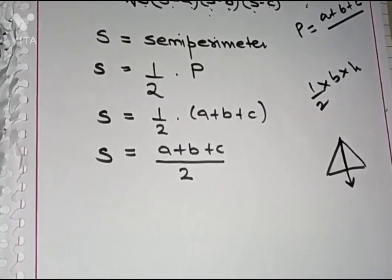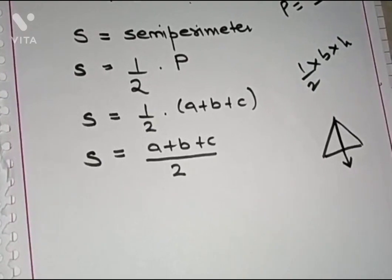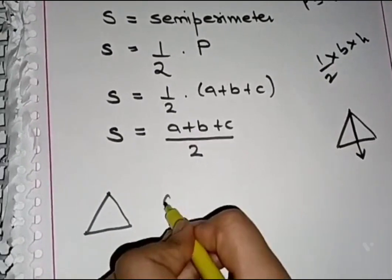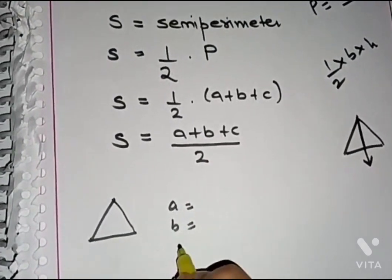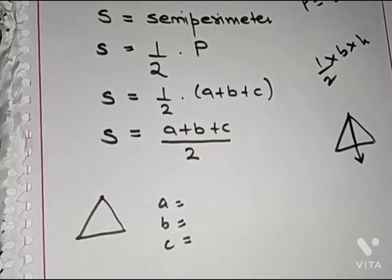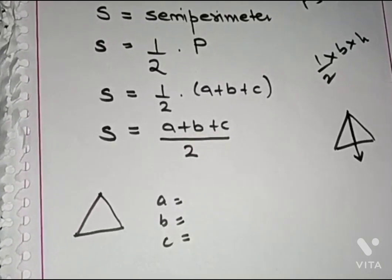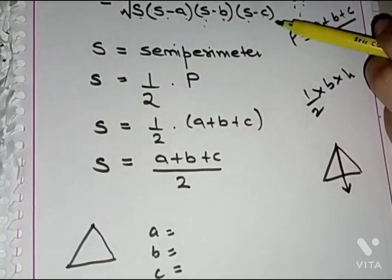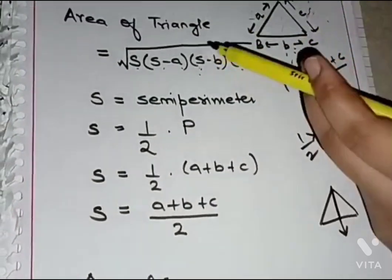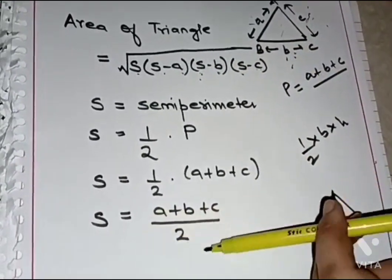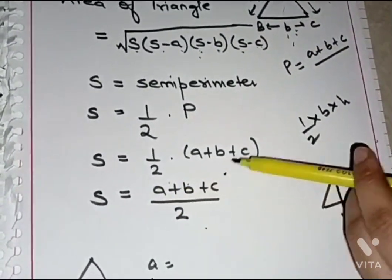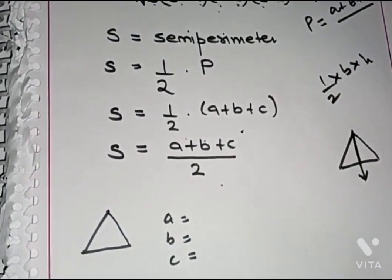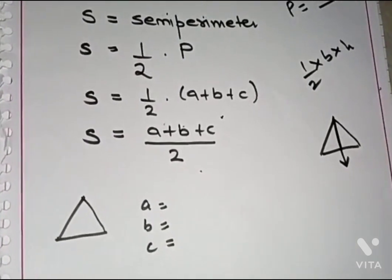Now we will see how to solve a question related to this. If any triangle is given with three sides, it is very convenient to use Heron's formula to find the area, because we can easily evaluate the semi-perimeter using the three sides and then calculate the area. Let's solve one question related to this formula.